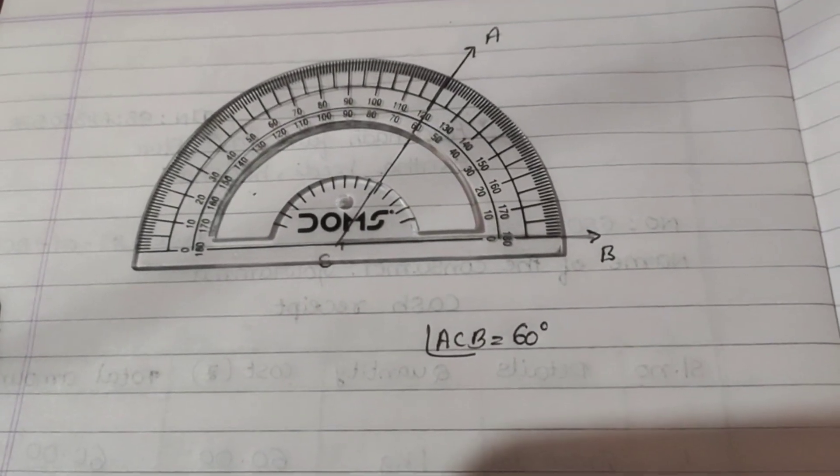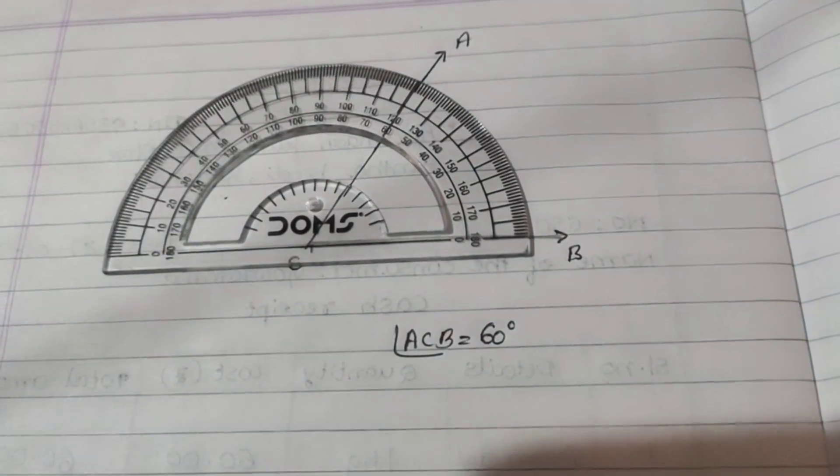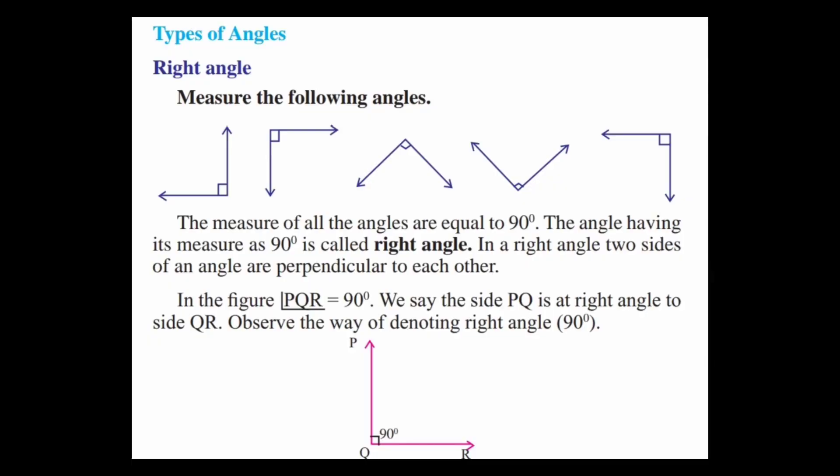Angle measure is confirmed. Now, the types of angles. Right angle: measure the following angles — the measure of all these angles is equal to 90 degrees. The angle having its measure as 90 degrees is called a right angle. In a right angle, two sides of the angle are perpendicular to each other. In the figure, angle PQR is equal to 90 degrees. We say the side PQ is at a right angle to side QR. The angle which is equal to 90 degrees is called a right angle.